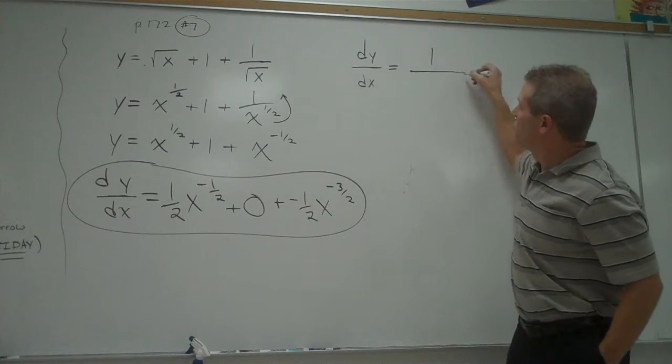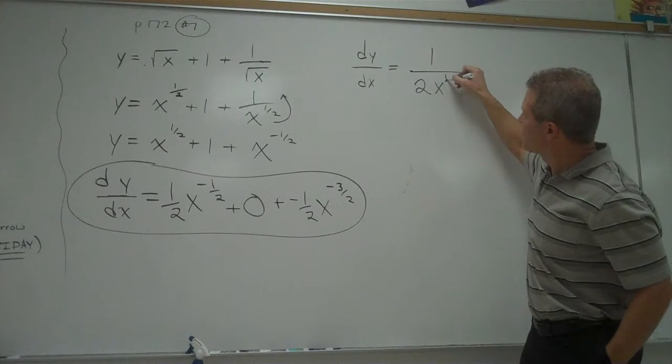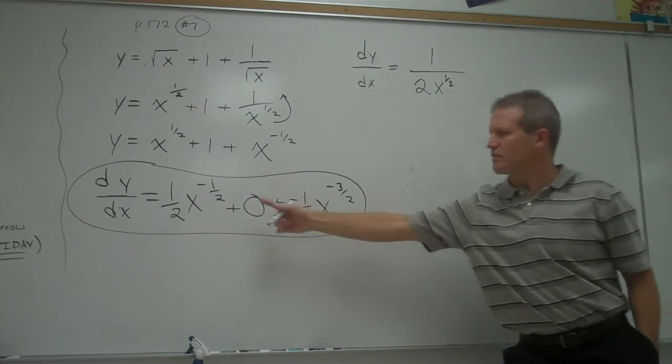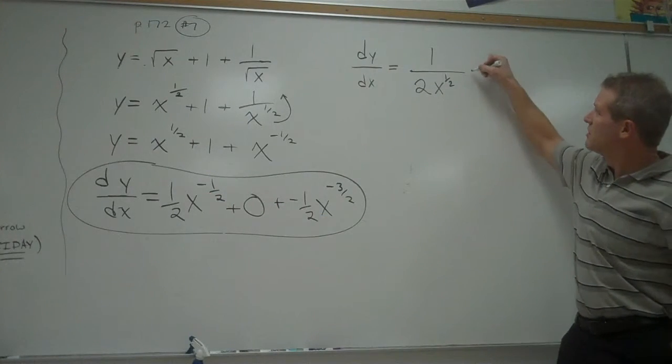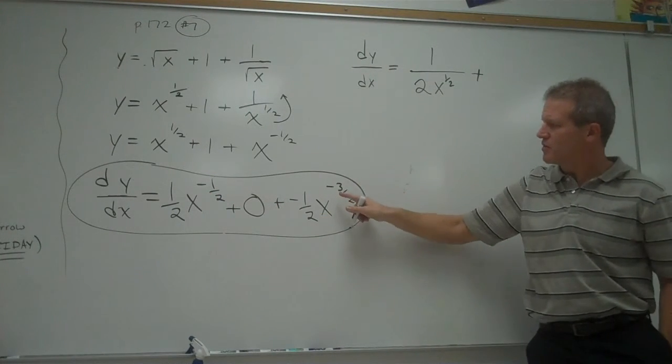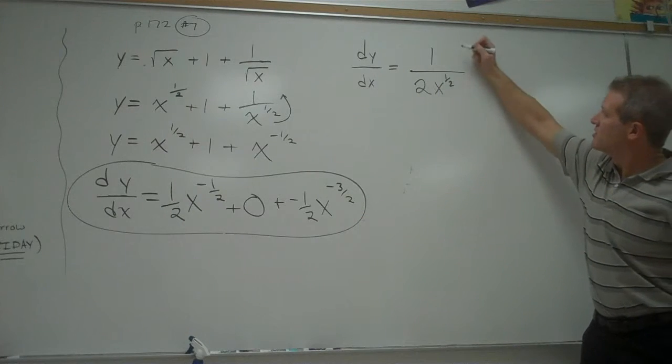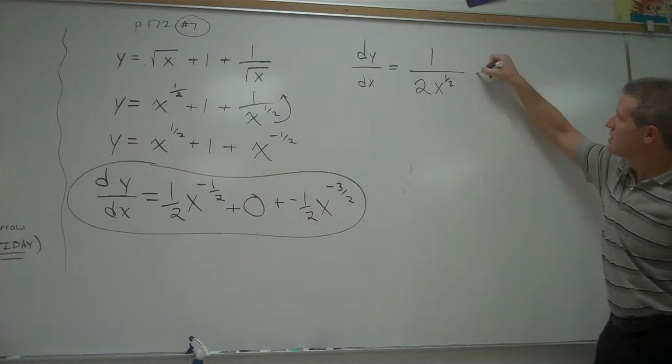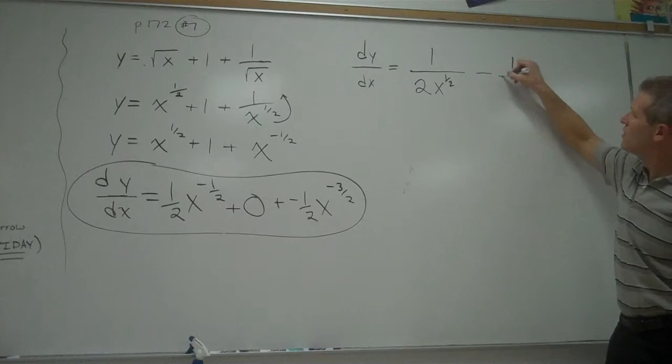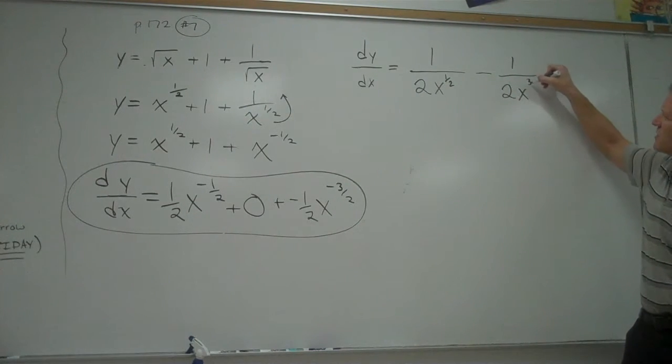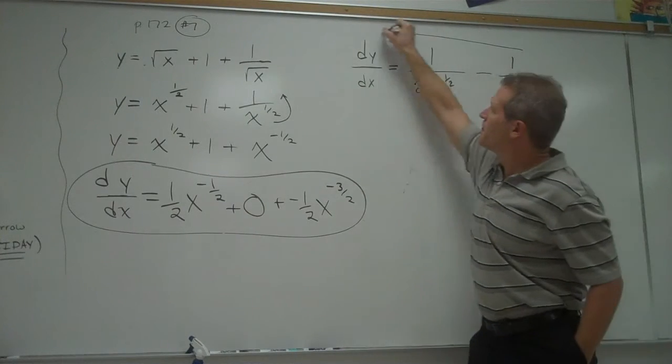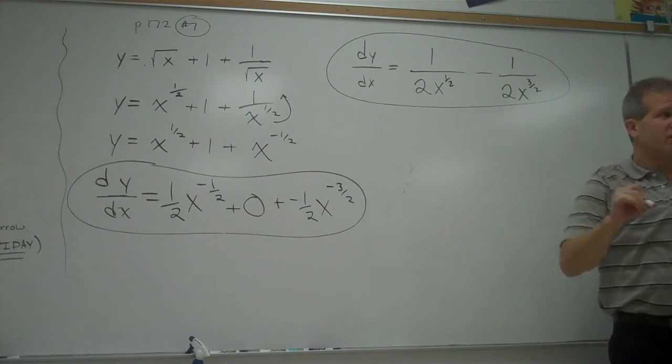So you could write it like this: one over two x to the half. That's just moving that to the denominator and making that positive. The zero you could drop off. Plus, same thing here. You could move that to the denominator. Instead of plus a negative, we could use a subtraction here. And then one over two x to the positive three halves.